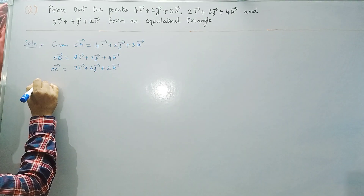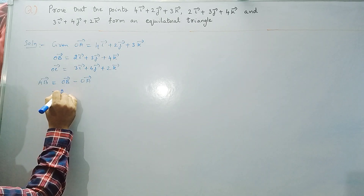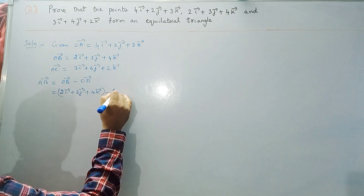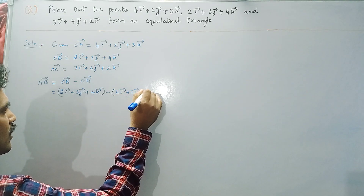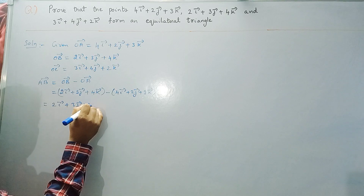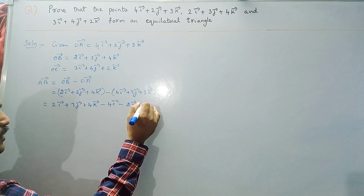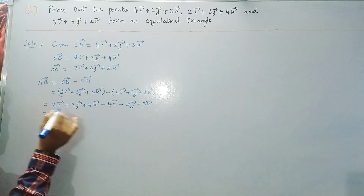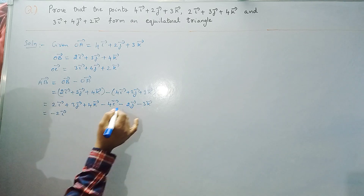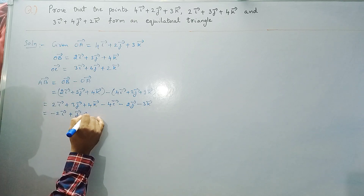First we find AB vector. AB = OB − OA = (2i + 3j + 4k) − (4i + 2j + 3k). Taking the minus sign inside: 2i + 3j + 4k − 4i − 2j − 3k. Combining: i coefficient is 2 − 4 = −2, j coefficient is 3 − 2 = +1, k coefficient is 4 − 3 = +1. So AB = −2i + j + k.